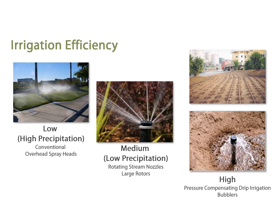Our traditional overhead sprays are considered low efficiency or high precipitation — they put out a lot of water quickly, so fast that water can't usually absorb into the soil and tends to move off laterally into the street. Newer technology is our low precipitation overhead sprays, like stream rotors with a circular pattern; these put out water much more slowly and the water stays where you apply it. Our most efficient types of irrigation are drip irrigation or bubblers, which have a very low output — gallons per hour with drip versus gallons per minute with overhead spray.